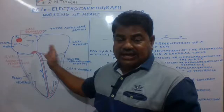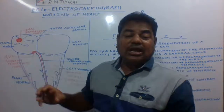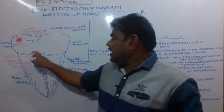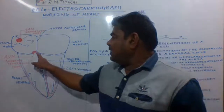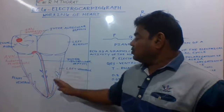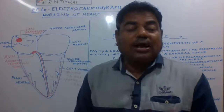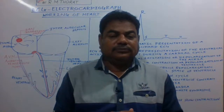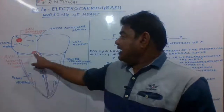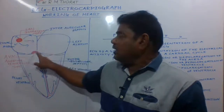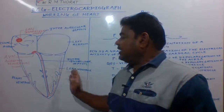The electrical impulse is then transmitted to what we call the Bundle of His. This electrical impulse, which is gained by the atrioventricular (AV) node from the SA node, is now transferred into the wall of the left ventricle and right ventricle.